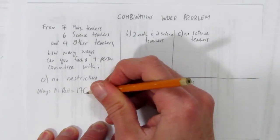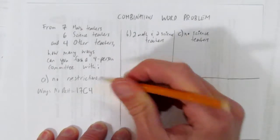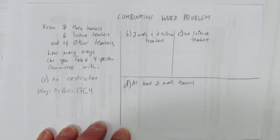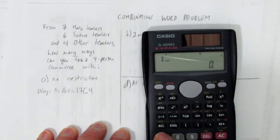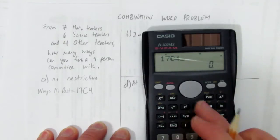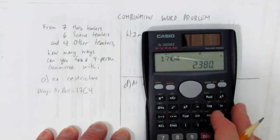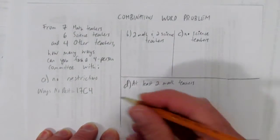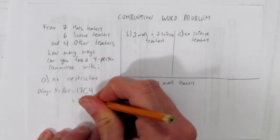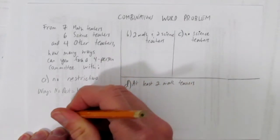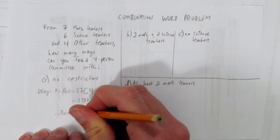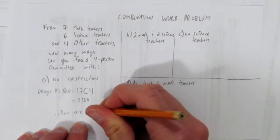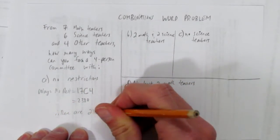So from the seventeen people, just choose four of them. Thus seventeen choose four, we pull out our calculator and calculate using the NCR button. Seventeen choose four is two thousand three hundred and eighty. So in this situation, no restriction, there are two thousand three hundred and eighty ways.